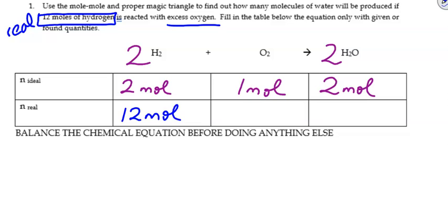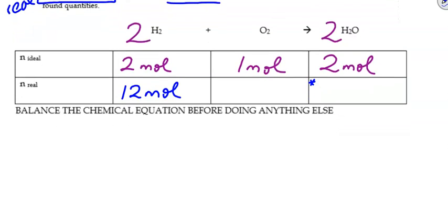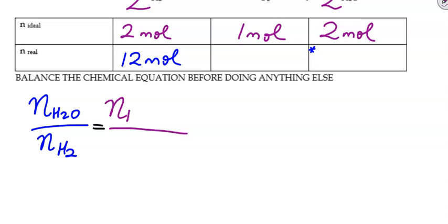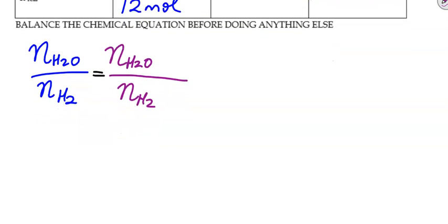So this one is just a simplified version. We're actually trying to find this value here. That's our target. So we're going to set up our magic triangle. So N of H2O over N of H2. And we're going to put that up against what we actually have. N of H2O over N of H2. Again, it's all about our ratios.